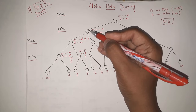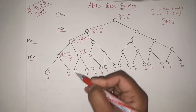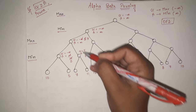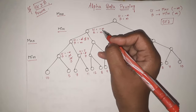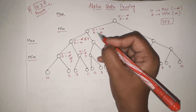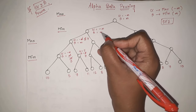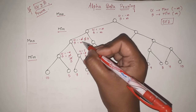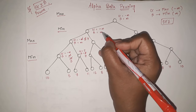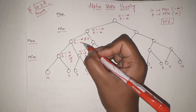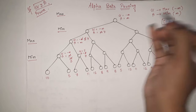After this, the updated value of alpha is 7 and beta is infinity. We will again go here — it is a min node so we update beta. The value of beta is infinity here. Out of infinity, 7, and infinity, the minimum is 7. So this is updated to 7.